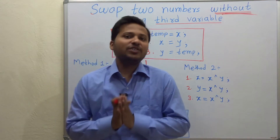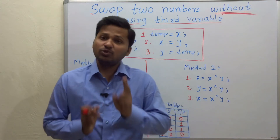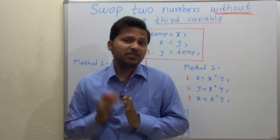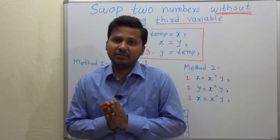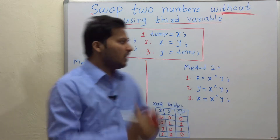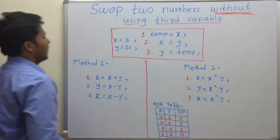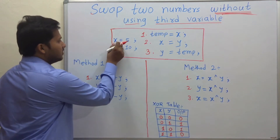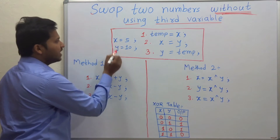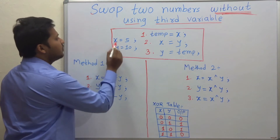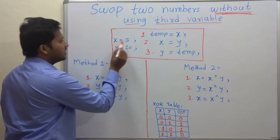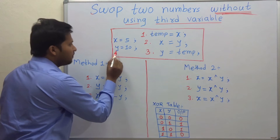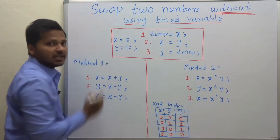Hello friends, today we are going to see how to swap two numbers without using a third variable. So as you can see here, these are the two variables x and y. The value of x is 5 and the value of y is 10.